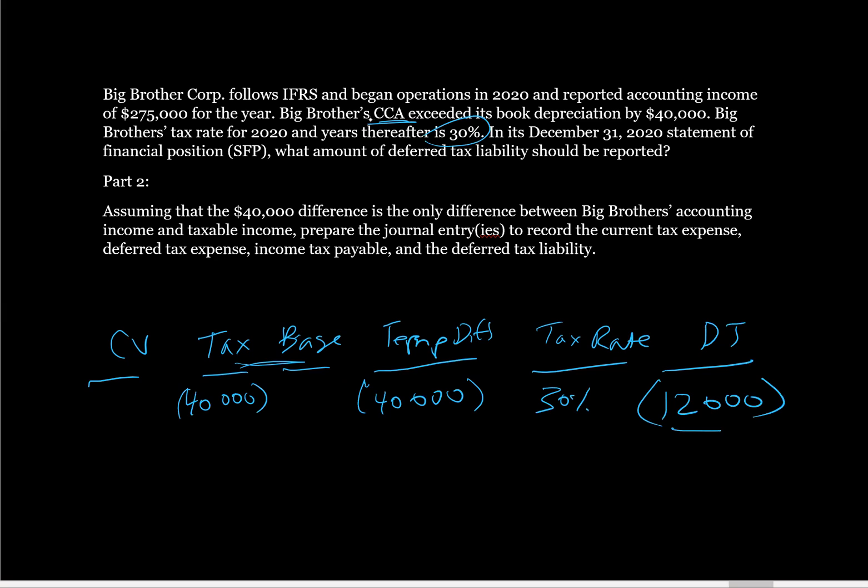Our tax rate we're given is 30%, so our deferred tax is going to be $12,000. Now, is this a deferred tax asset or deferred tax liability? Well, the fact that we've taken more CCA for tax than our carrying value means we're going to have less CCA we can take in the future, because the most CCA that we can take is the total value of the asset. So this means we're going to have more tax in the future, so this is going to be a deferred tax liability. So that's our deferred tax liability that we're going to record, and that answers this question.